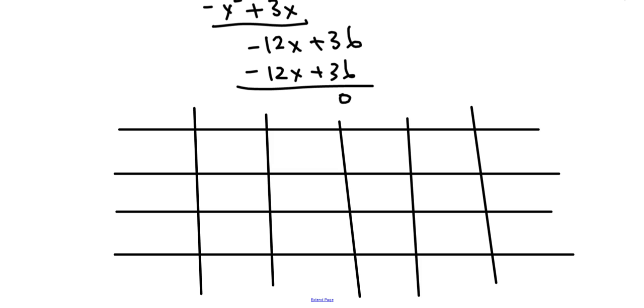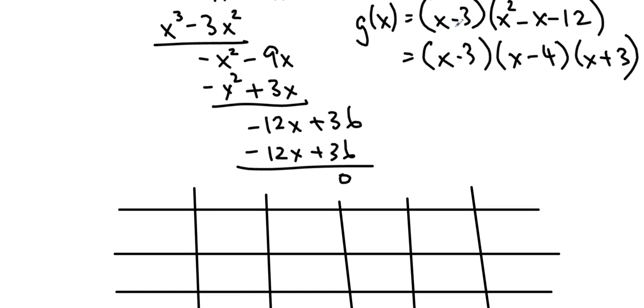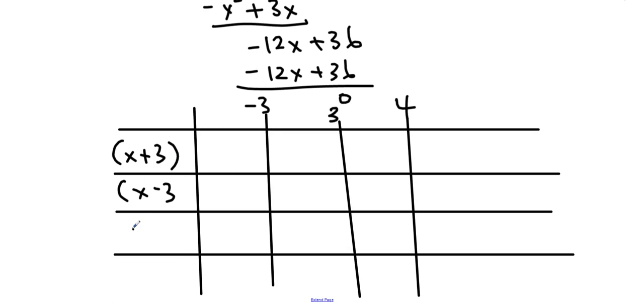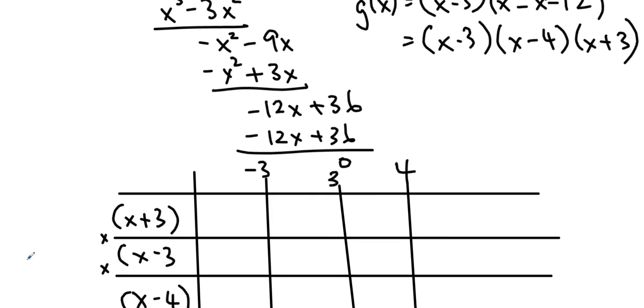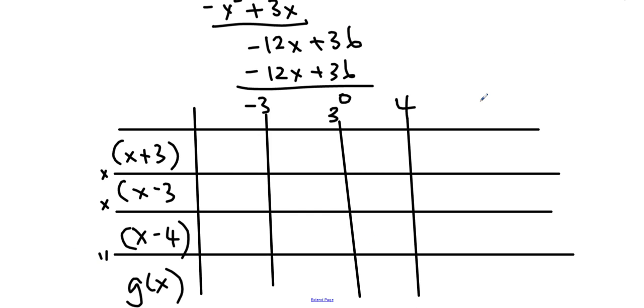I'm going to put my factors and then I'm going to put my zeros here. My zeros were, if you put them in order, -3, 3, and 4. Then we're going to write our factors. You can write them in order, but it doesn't really matter as long as you're thinking straight. I'm going to put them in order. So x+3 matches -3, so I'll put that here. Then x-3. And then x-4. If I multiply all of these together, then I'm going to get g(x), because we have these as the factors.